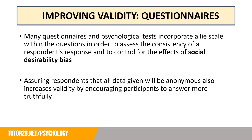If asked about improving the validity of a questionnaire, many questionnaires and psychological tests incorporate a lie scale within the questions to assess the consistency of a respondent's responses and to control the effects of social desirability bias — in other words, to stop participants choosing answers that make them look better. A lie scale works by asking respondents about the same topic just worded differently, to see whether their responses are consistent. You could also assure respondents that all data given will be anonymous, which increases validity by encouraging participants to answer more truthfully.